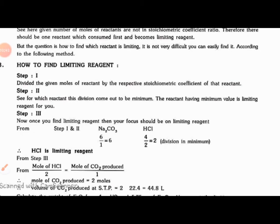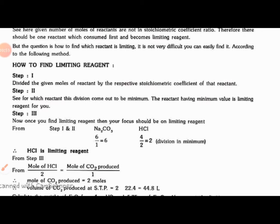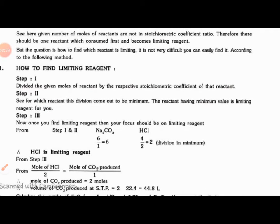The reactant having minimum value is limiting reagent for us. The one which has the smallest value will be our limiting reagent. Now once you find the limiting reagent, then your focus should be on the limiting reagent.